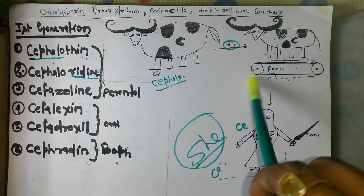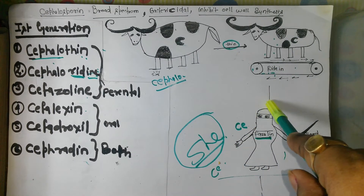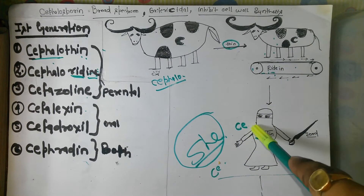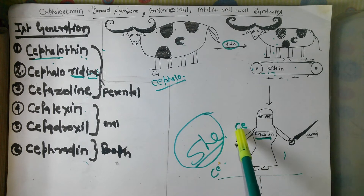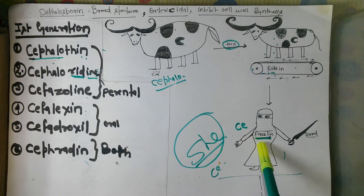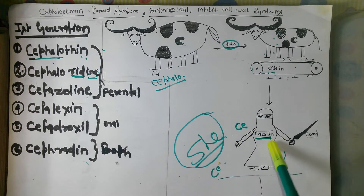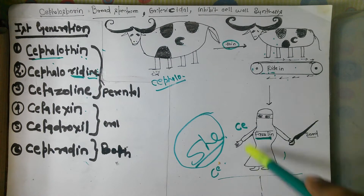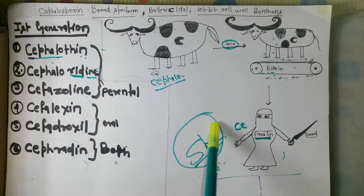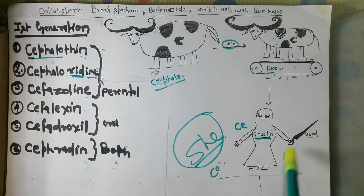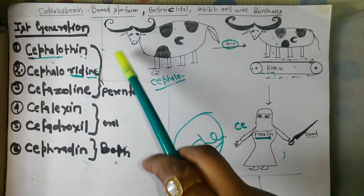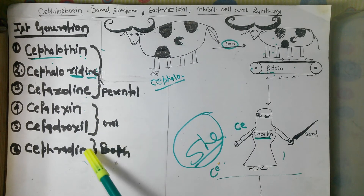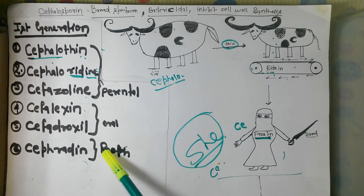He wants to be thin for a girl whose name is Fazolein — she is the third drug, Cefazolin. She is very aggressive and has a sword in one hand. Because of this, these three drugs — Cephalothin, Cephaloridine, and Cefazolin — are parenteral, while the next two drugs are oral, and the last drug is both.